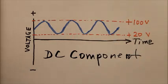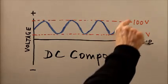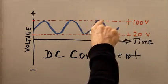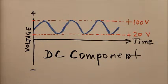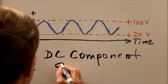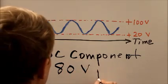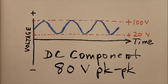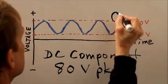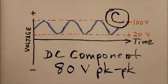In this case, the difference between plus 100 and plus 20, the difference between the wave crest and the wave trough, and that's pretty evident that that's 80 volts peak-to-peak. And that is choice C.